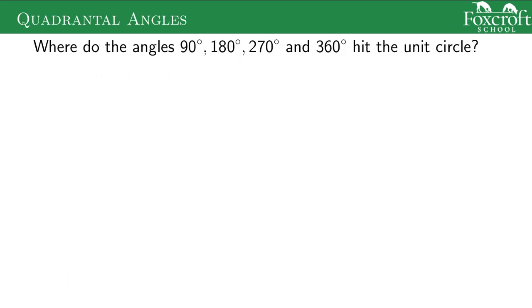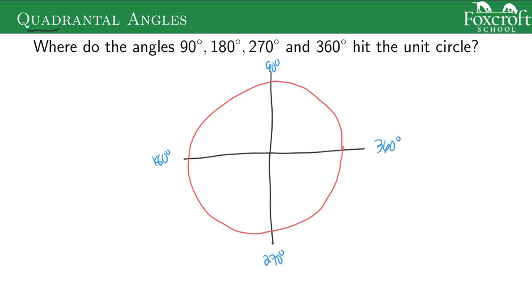The first one we're going to start with is what are called the quadrantal angles because they break up the quadrants. We have our xy plane, we have our unit circle, which is a circle of radius 1. We have our 90 degree angle up here, 180 degree angle there, 270 here, 360 there. Where do these angles hit the unit circle?